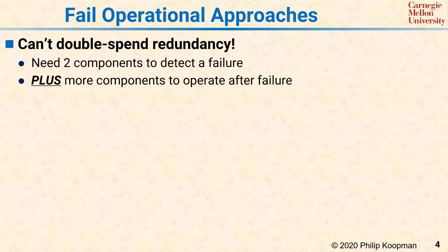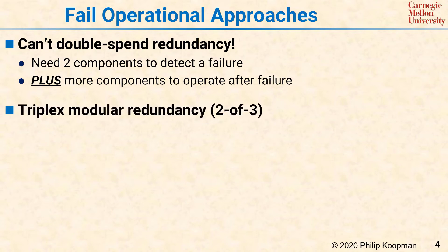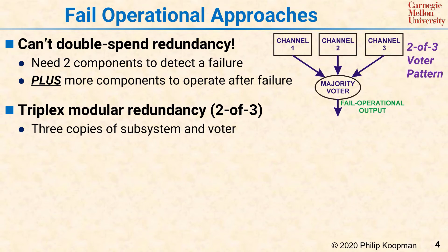One famous safety-critical computing pattern is triplex modular redundancy, sometimes called TMR or 2-out-of-3. The idea is to use three identical computers—Channels 1, 2, and 3—and then add a majority voter. Ignoring the voter, you're using three computers to do the job of one: the first two are there for fault detection and the third is there for availability.